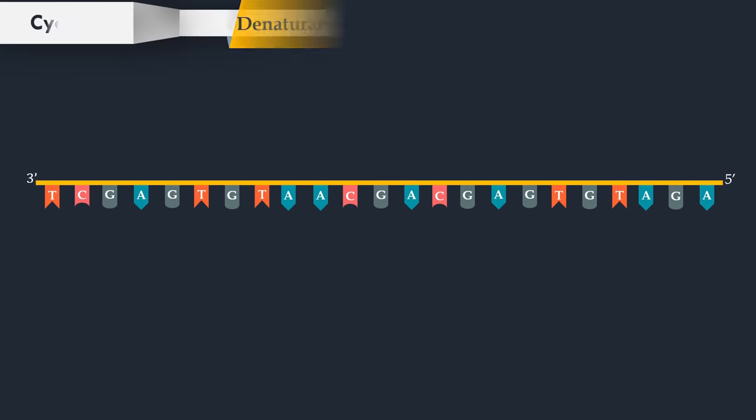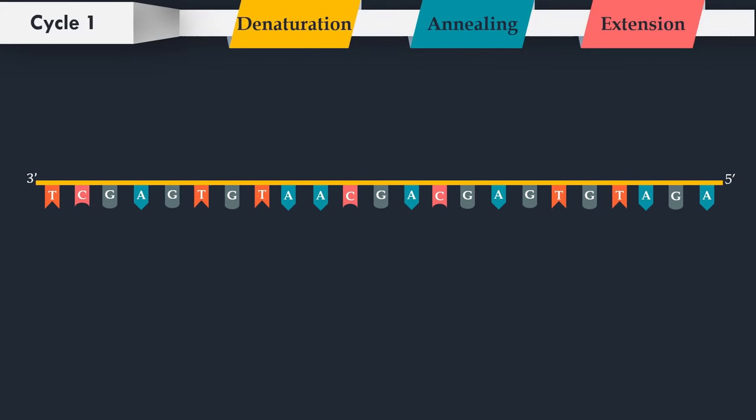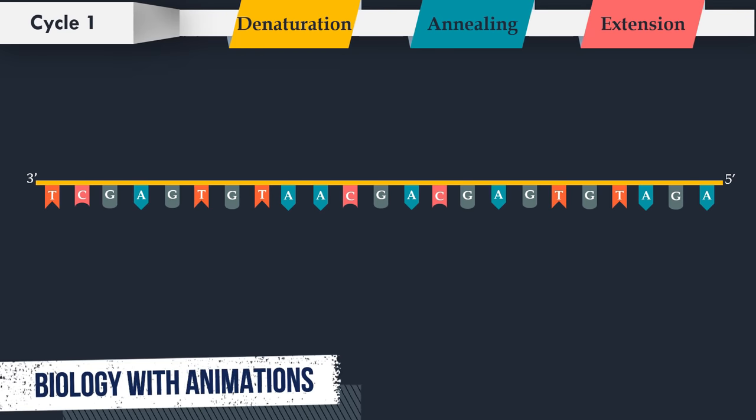PCR consists of a series of thermal cycles, with each cycle consisting of denaturation, annealing, and extension steps.